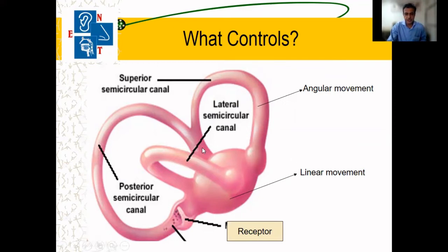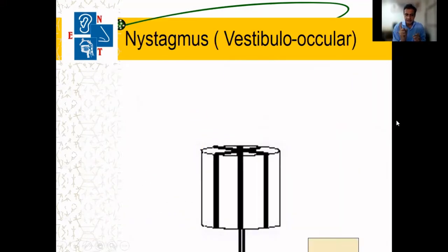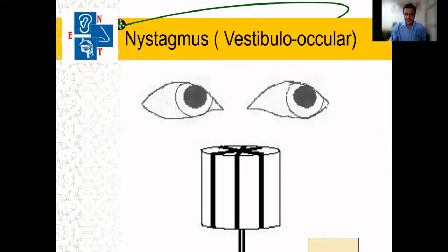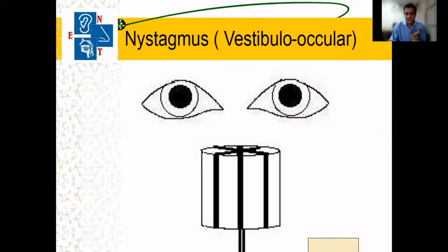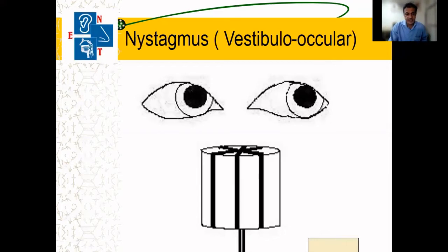When we are walking in a straight line, the balance is maintained by the utricle and saccule area. When we see this photo, our eyes are moving in a rhythmic fashion, and this oscillatory movement of the eyeball is typically called nystagmus, which is seen in quite a few ear-related and cerebral conditions.